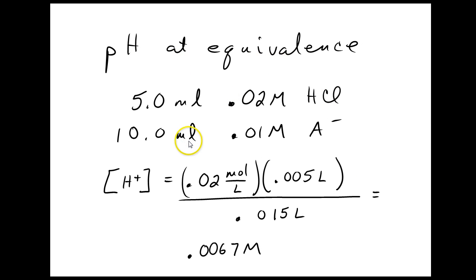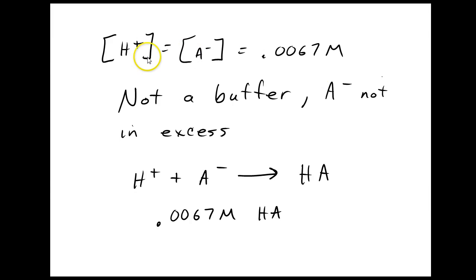To get the pH at the equivalence, I'm going to look at 5 milliliters of 0.02 molar HCl mixed with 10 milliliters of 0.01 molar A minus. I'm going to find my H plus concentration after I've diluted it. So I took 5 milliliters of my HCl. I mixed it with 10 milliliters of A minus for a total of 15 milliliters. So I'm cutting the concentration by 3. I get 0.0067 molar. Because it's the equivalence point, we could go through that whole calculation again for the A minus. But I'm going to choose to trust myself. And I know that these two are equal because it's the equivalence point.